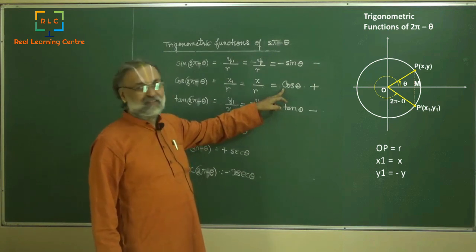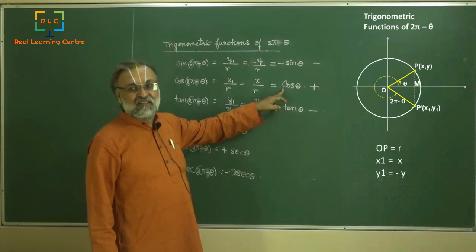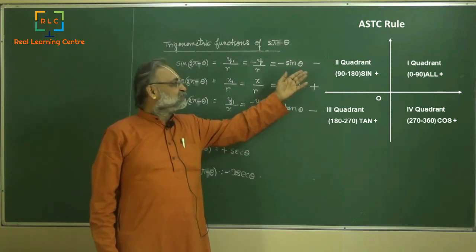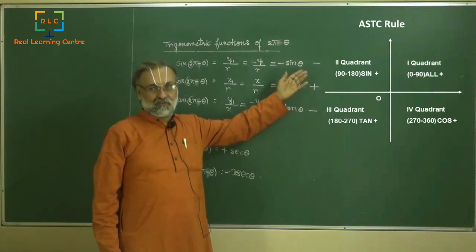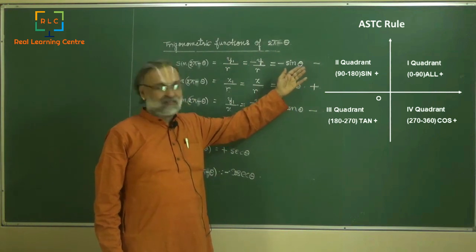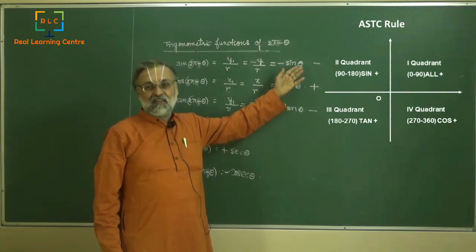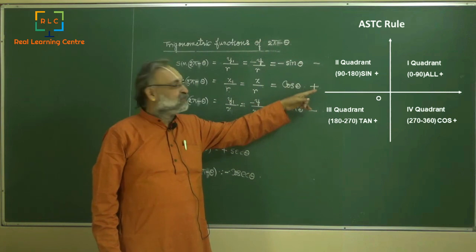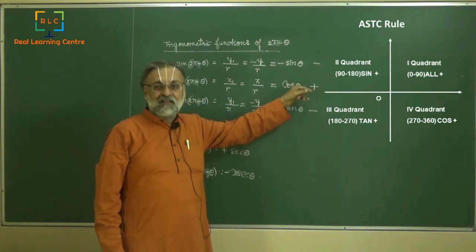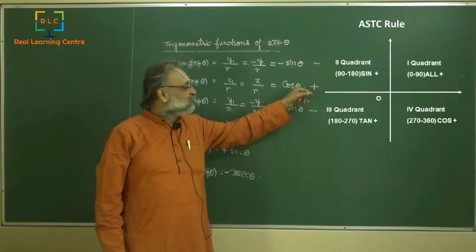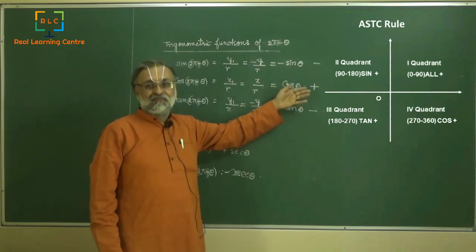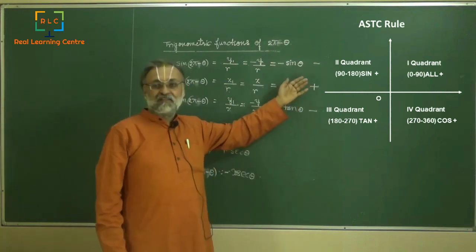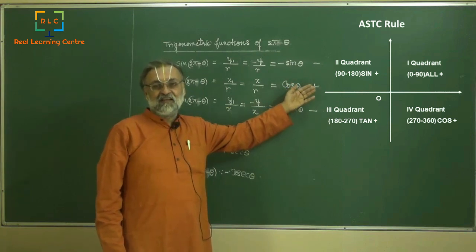Therefore, we come across what is known as the ASTC rule. Please look at this diagram. In the first quadrant, all trigonometric functions are positive. In the second quadrant, sin is positive — and therefore cosecant is also positive. In the third quadrant, tan is positive and cot is also positive. In the fourth quadrant, cos is positive and secant is also positive. You have to remember this as the ASTC rule.